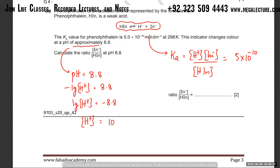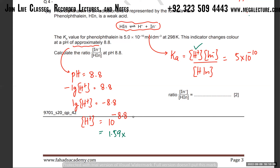To take the anti-log, press Shift then log on your calculator. Whenever pH is given, you can find H⁺ concentration because pH = −log[H⁺] = 8.8, so log[H⁺] = −8.8, and taking the anti-log gives 10^(−8.8). Pressing Shift+log gives a very low concentration: 1.59 × 10⁻⁹ mol dm⁻³.